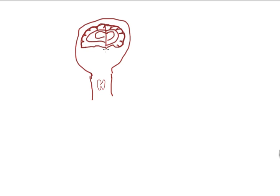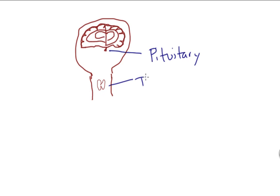Right here at the bottom of your brain, there's this little thing hanging off. That thing right there — you probably know — that's the pituitary. And just to make sure, this here is your thyroid.